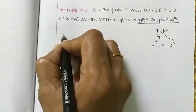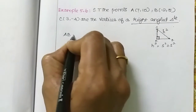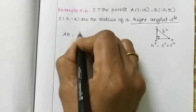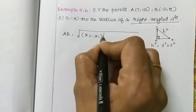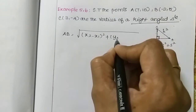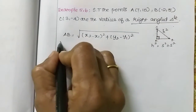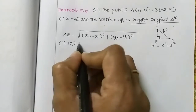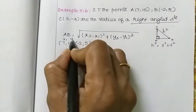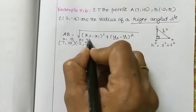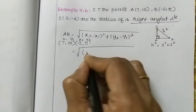First, we use the distance formula. The distance between A and B: formula is root of (x2 minus x1) whole square plus (y2 minus y1) whole square. Here A is (7,10) and B is (-2,5), so x1=7, y1=10, x2=-2, y2=5.